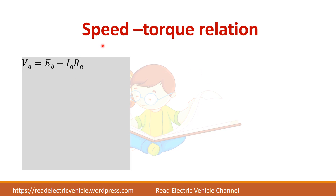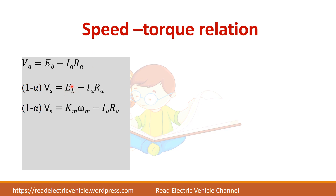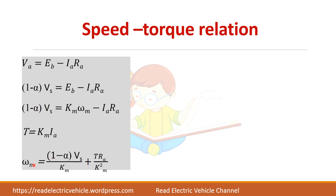Next we will derive the speed-torque relation. For a motor, VA = EB + IA·RA, but here the motor works as a generator, so it is written as EB − IA·RA. The average voltage is (1 − α)·Vs, so (1 − α)·Vs = EB − IA·RA. Since the back EMF EB = KM·ωM, substituting gives ωM. Similarly, torque T = KM·IA, so IA = T/KM, and substituting yields the speed-torque relation.